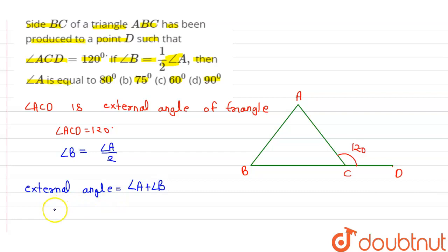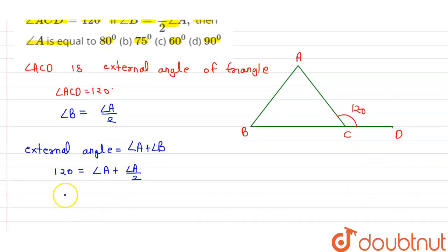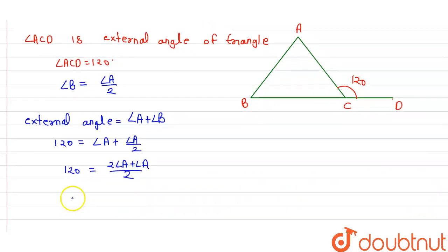Here we have given the value of external angle that is 120 equals angle A plus, in place of angle B, we can write angle A by 2. Then further we solve and get 120 equals, 2 will be taken as LCM, then it will be 2 angle A plus angle A. Then we solve and get 120 equals 3 angle A by 2.